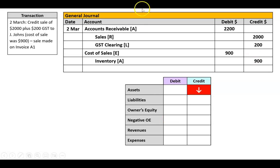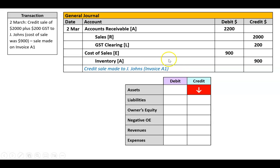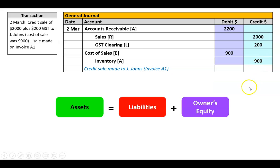Note that the little brackets where I write what the account is — whether it's an asset, revenue, liability, and so on — you don't need to do that. That's completely optional; it's just something I do to help me figure out my debits and credits. You also don't need to do it in this order. I've done the debits first and then the credits, but as long as it's all there, you could even have the cost of sale on top of the sale. What does matter is that you put a narration which describes the transaction. So we write: credit sale made to J. Johns, invoice A1. The most important thing is we've got the source document number. We then make sure our debits equal our credits — in this case $2,200 and $900 in the debits, and $2,200 and $900 in the credits. That equals $3,100, so we're good.